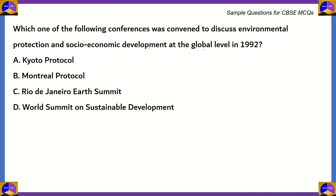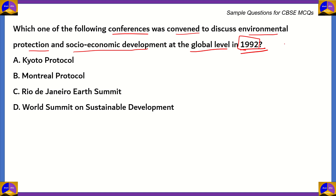Now let's look at the final question of this episode. Which one of the following conferences was convened to discuss environmental protection and socio-economic development at the global level in 1992? We have: the Kyoto Protocol, the Montreal Protocol, the Rio de Janeiro Earth Summit, or the World Summit on Sustainable Development. Let's look at the year in particular — 1992 — and we are looking at a summit which discusses environmental protection as well as socio-economic development.